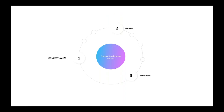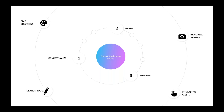The typical product development process — what does it look like? The big picture is something like conceptualize, model, visualize. But within those phases, you'll get into the details of the process, and that's where you'll find KeyShot. If we expand the product development process, you have ideation tools, CMF solutions, photo-real imagery, and interactive assets. KeyShot is more than just an amazing rendering software — it's a problem-solving tool that will give you a faster workflow and tighter integration.